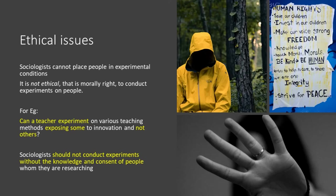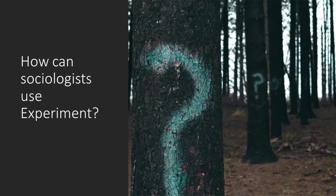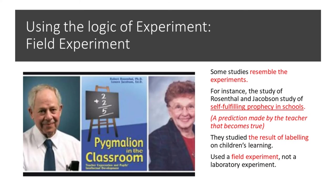What about ethical issues? Sociologists cannot place people in experimental conditions — it is not ethically right to conduct experiments on people. For example, can a teacher experiment on various teaching methods, exposing some students to innovation and others not? Besides, the sociologist should not conduct experiments without the consent of the people being researched. So how can sociologists use experiments? Remember the logic of experiments discussed at the beginning. There are ways in which sociologists could conduct research similar to the experimental model, which is why they use the logic of experiments while conducting field experiments.